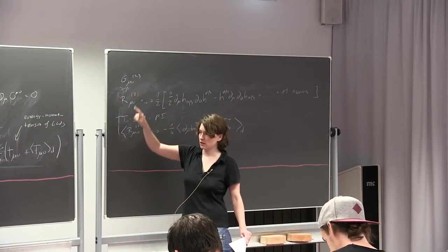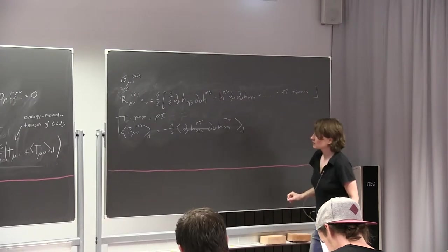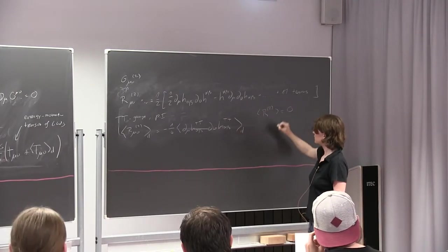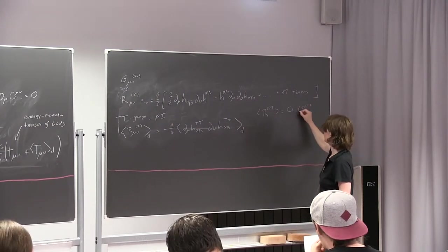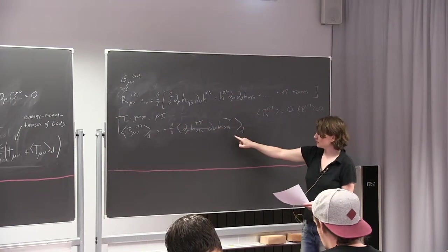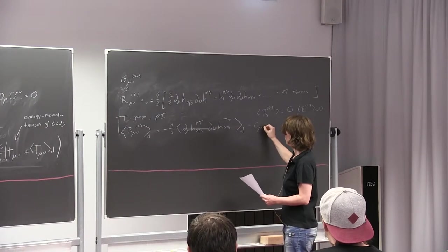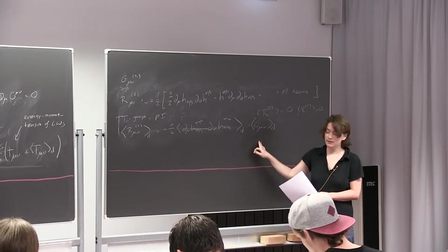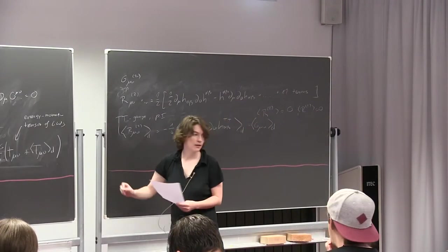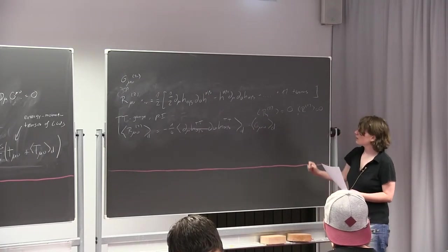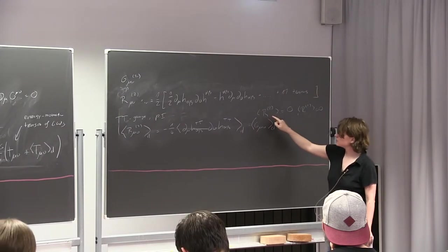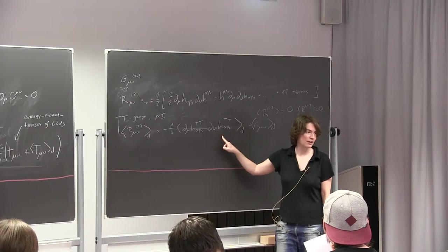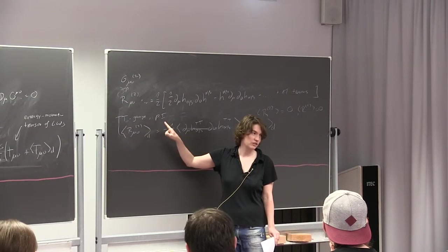To compute G_{mu nu} we also need the second term involving the Ricci scalar. But you can explicitly check that the Ricci scalar to second order is zero, and also to first order is zero. So G_{mu nu} second order reduces to just R_{mu nu} second order. It's one of those computations that gets ridiculously messy on the way, but the result is very nice. You need both the transverse traceless gauge and partial integration to arrive at this simple formula.